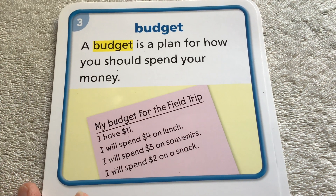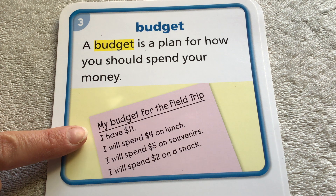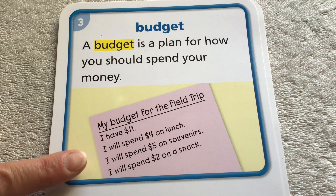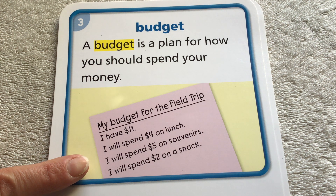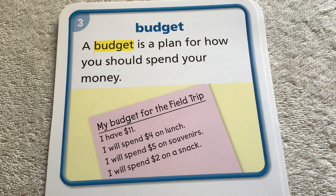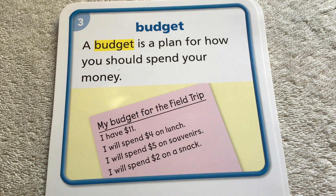Talking a little bit more about money is the word budget. A budget is a plan for how you should spend your money. And it says right here, my budget for the field trip — I have $11. I will spend $4 on lunch, I will spend $5 on souvenirs, I will spend $2 on a snack. So a budget is a plan for how you're going to spend the money that you have. You have a certain amount of money, you want to make sure you spend it and get the things that you need, as well as hopefully some of the things that you want.